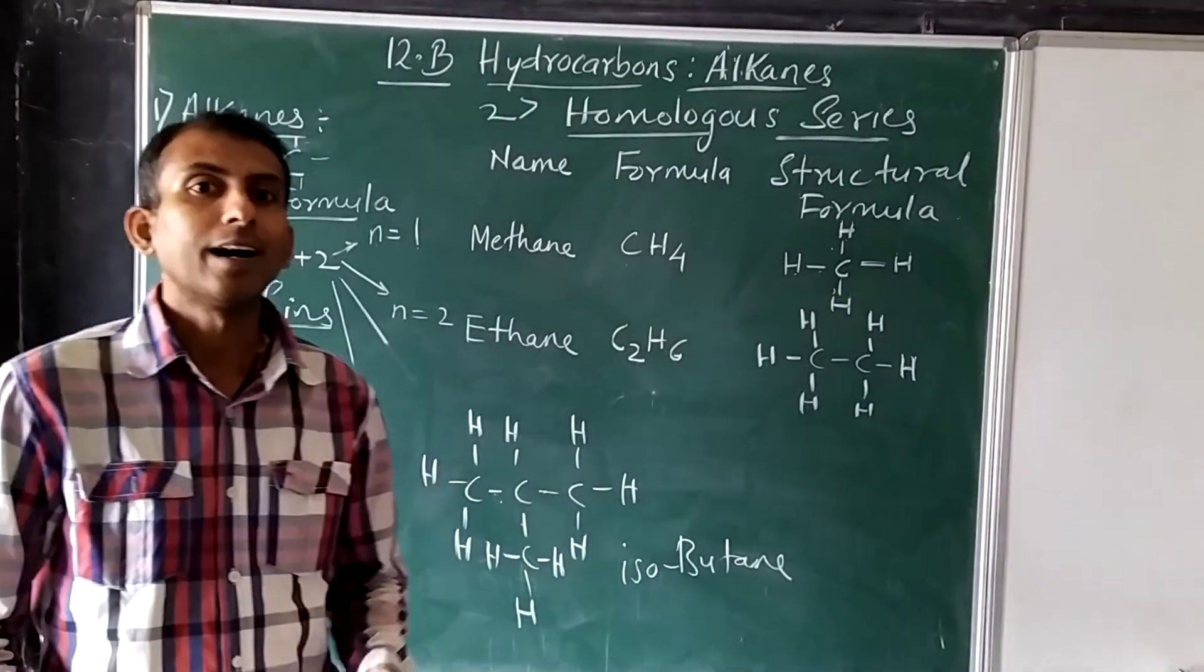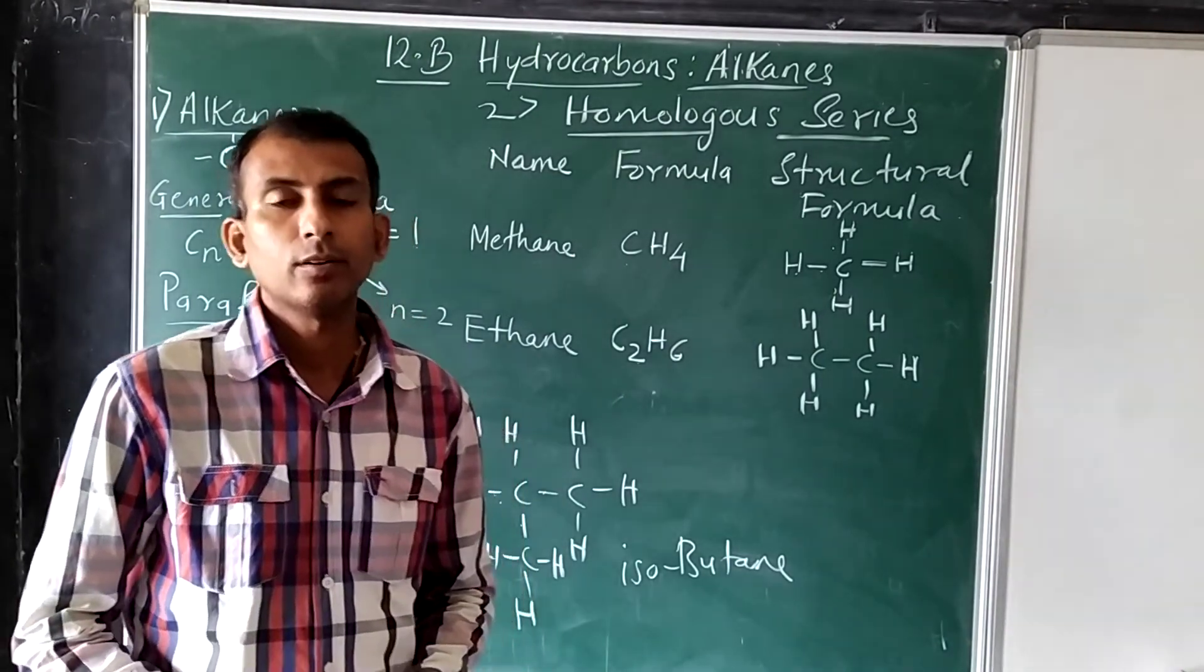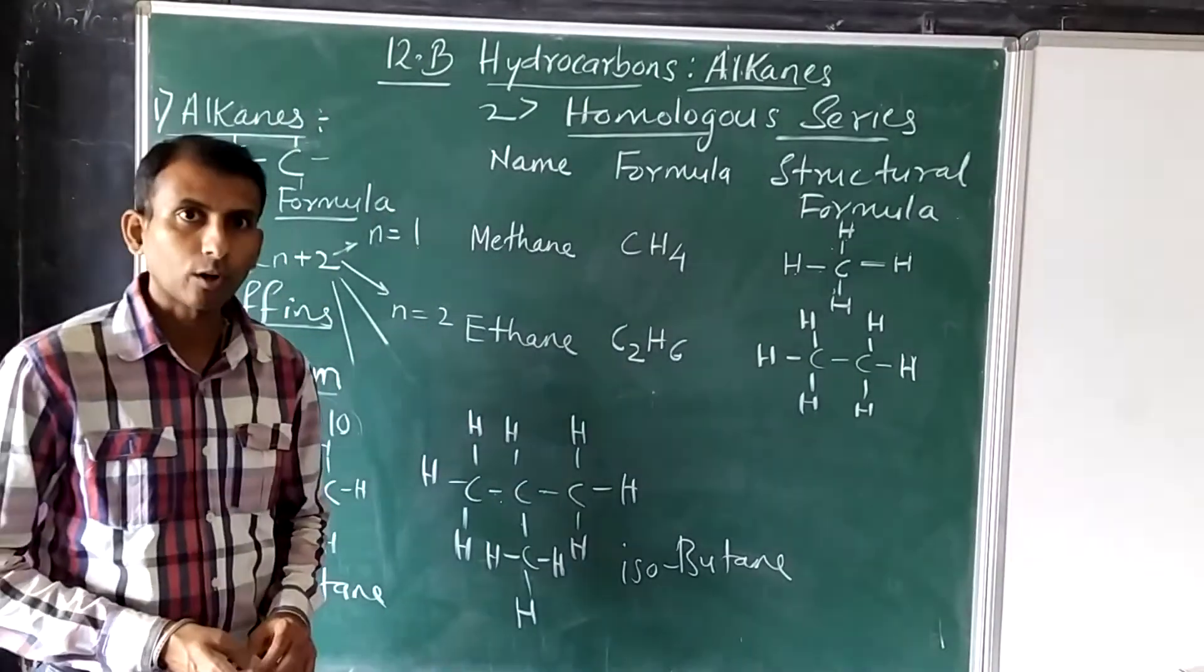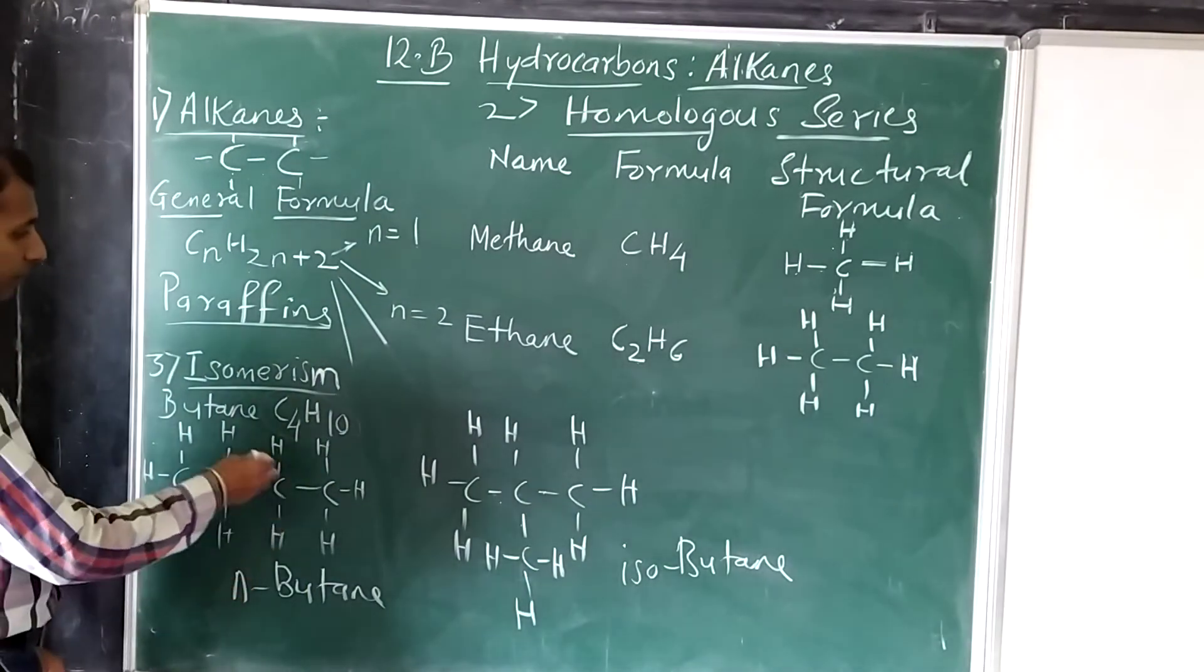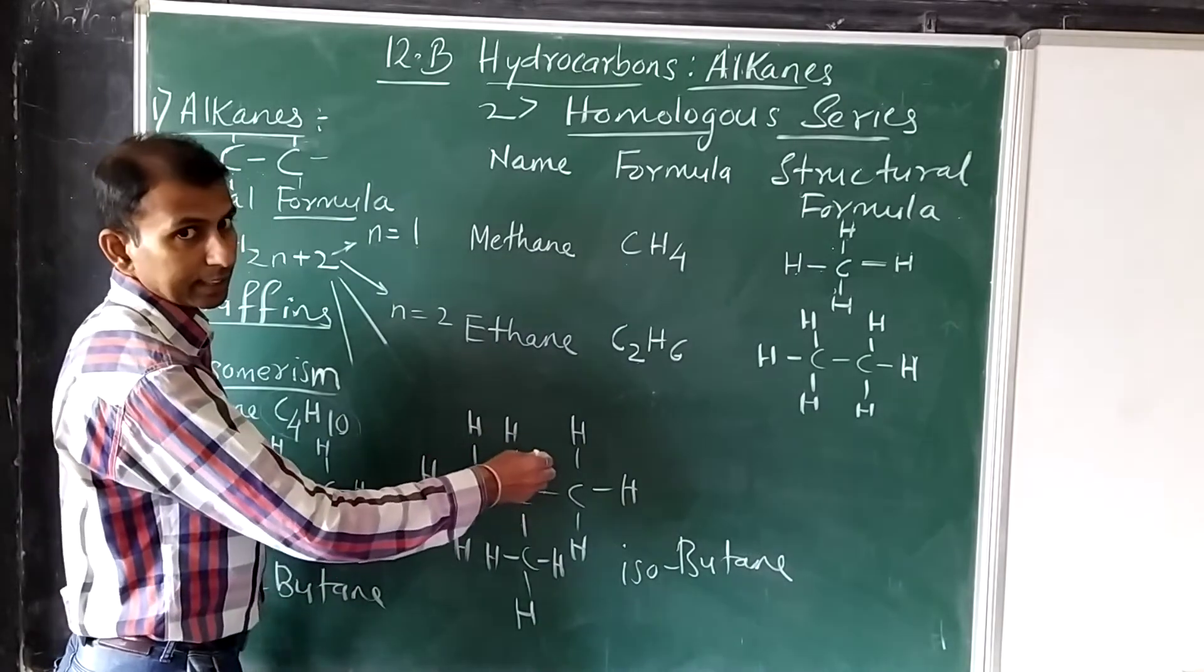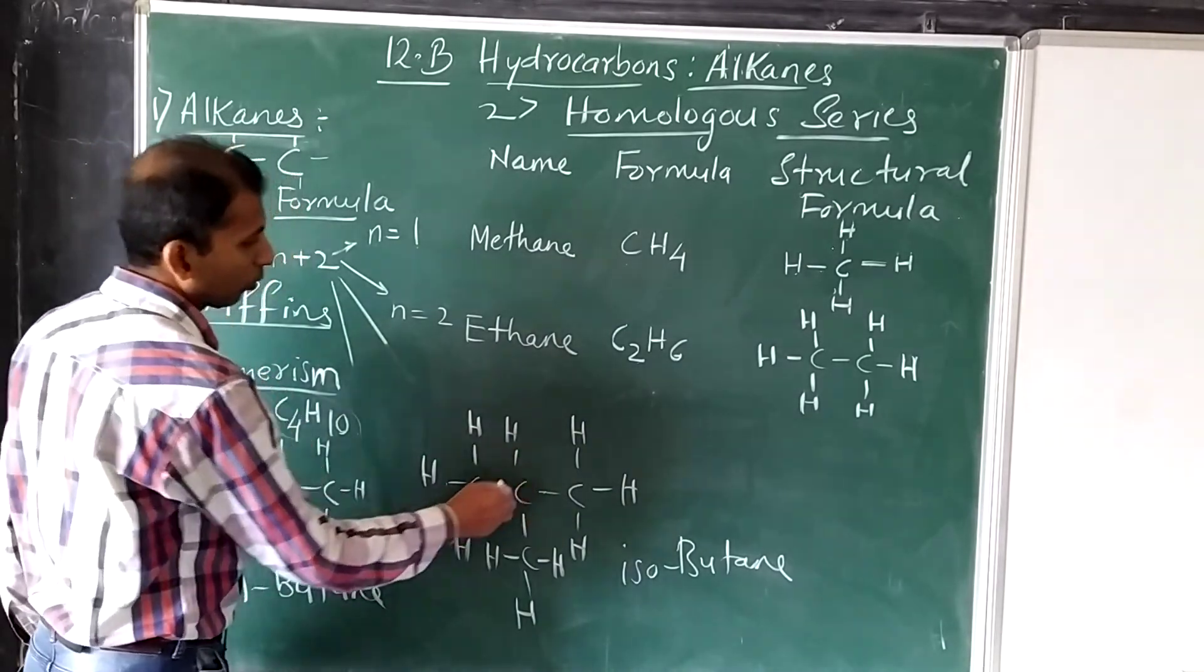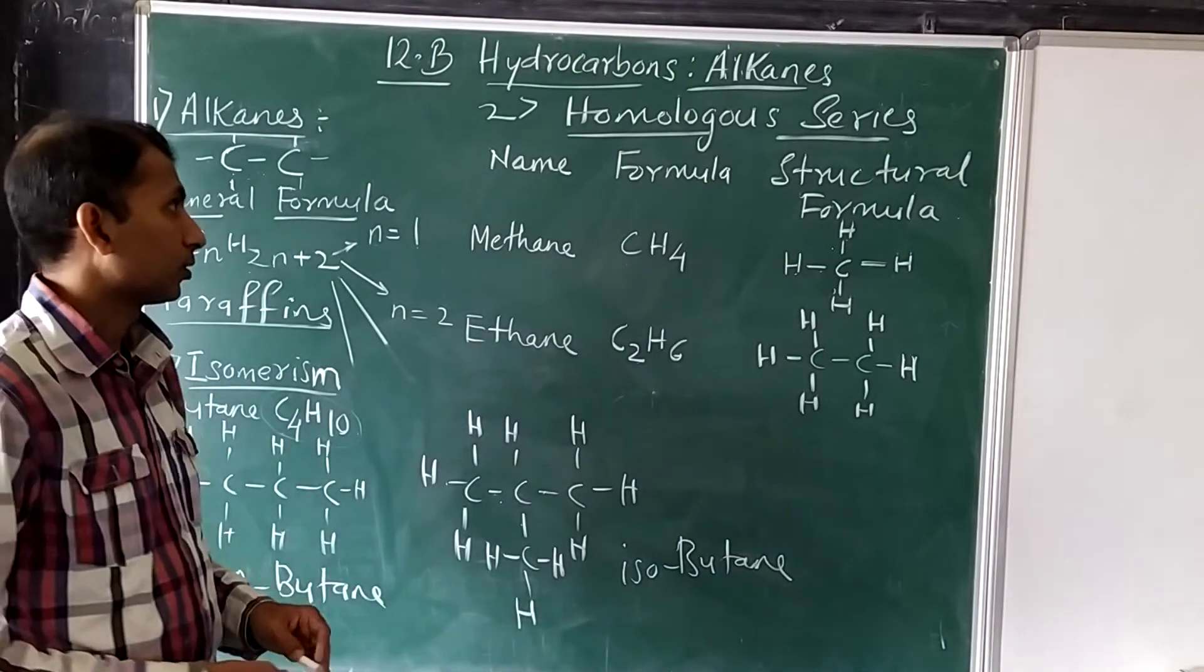This way you can write down the isomers for butane, and you can also practice writing down the isomers for pentane, hexane to understand the concept of isomerism. Here also, as you can see, all the carbons' tetravalencies are satisfied by single single covalent bonds, because they are isomers of alkanes.